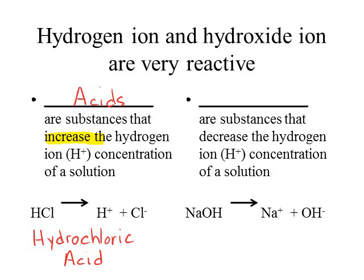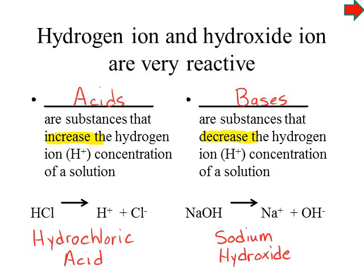The converse of acids are bases. Bases are substances that decrease the hydrogen ion concentration of a solution. The example given here is sodium hydroxide, the base you used in laboratory last week. When sodium hydroxide ionizes, it forms a sodium ion and a hydroxide ion. The hydroxide ion readily combines with hydrogen ions to form water, essentially decreasing the hydrogen ion concentration by removing them from the solution.